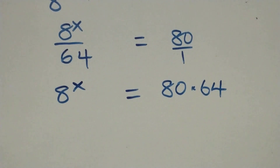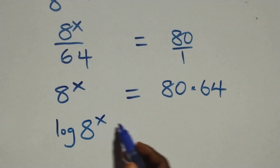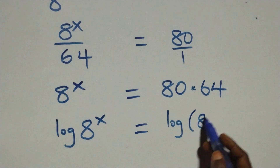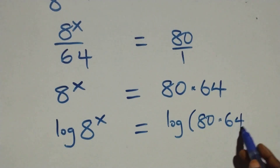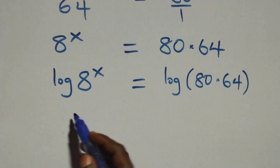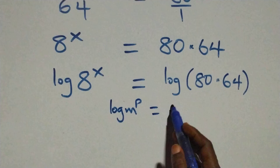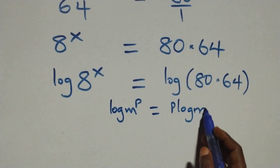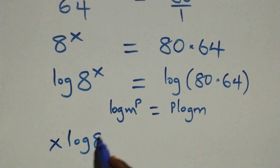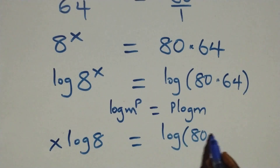Next step: we take the log on both sides. We have log of 8 raised to power x equals log of 80 times 64. We apply the power law of logarithm — that is, log m raised to power p is the same as p log m. So we have x log 8 equals log(80 times 64).